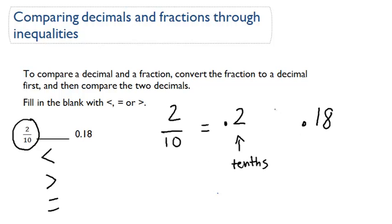0.2 is clearly greater than 0.18, because you compare the place values. The tenths value, there's a 2, and there's a 1 in the tenths value here. So your final answer, greater than, two-tenths is greater than 0.18.